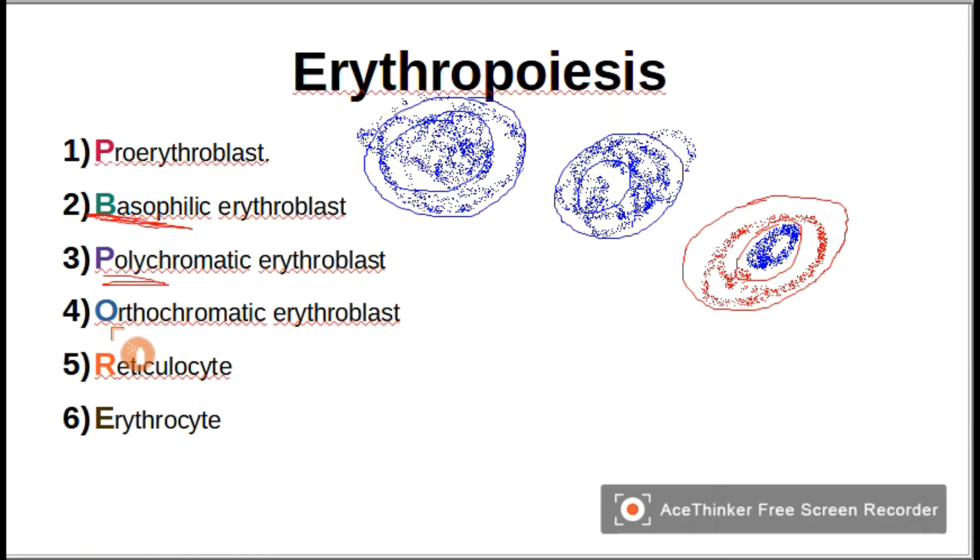The fourth one is orthochromatic erythroblast. It has a small nucleus with loose chromatin or intact chromatin in it.